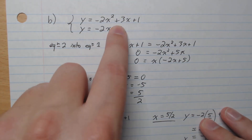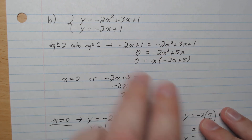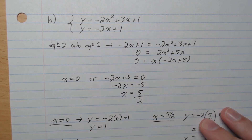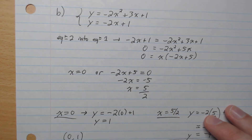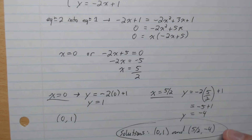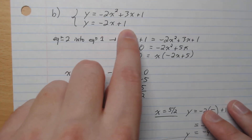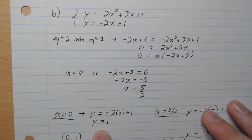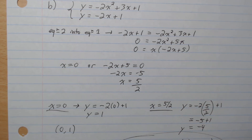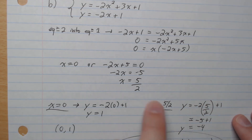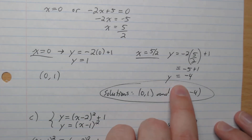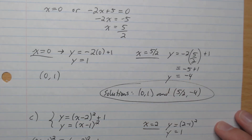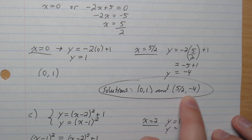Part B: substitute equation 2 into equation 1, put it all on one side, and factor out x. We get x equals 0 or x equals 5/2. When x = 0, plugging into the function gives y = 1, so the first solution is (0, 1). When x = 5/2, plugging into the second function gives y = negative 4. Those are the two solutions to the system.